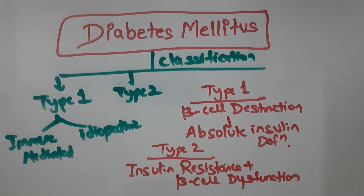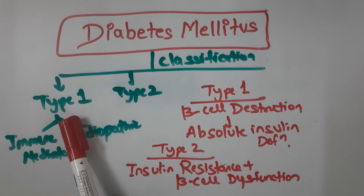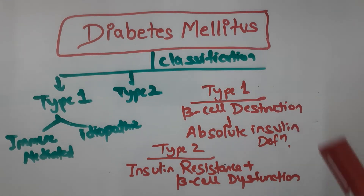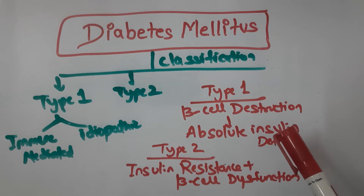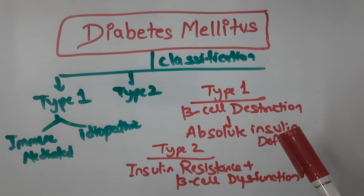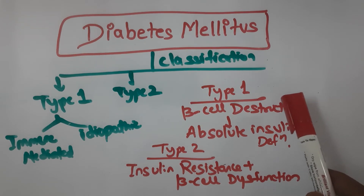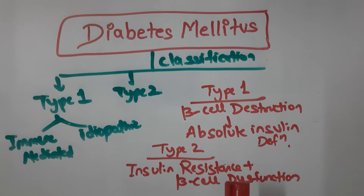Now we will discuss the classification of diabetes mellitus. The two most prominent types are Type 1 and Type 2 diabetes mellitus. Type 1 could be immune-mediated or idiopathic. The basic etiology behind Type 1 is beta cell destruction — the beta cells of the pancreatic islets produce insulin, and if destroyed, there is an absolute deficiency of insulin. In Type 2, there is insulin resistance and beta cell dysfunction.